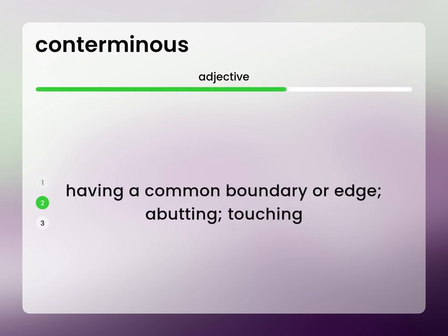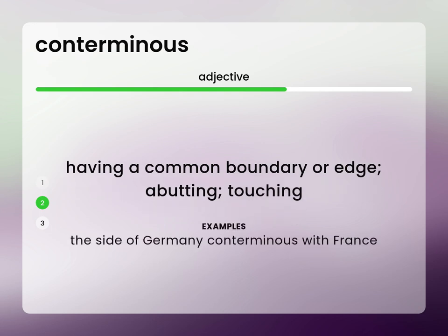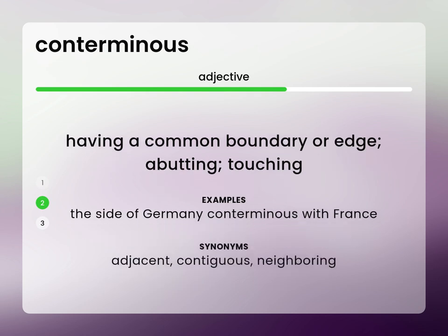Having a common boundary or edge. Abutting, touching. The side of Germany coterminous with France. Adjacent, contiguous, neighboring.